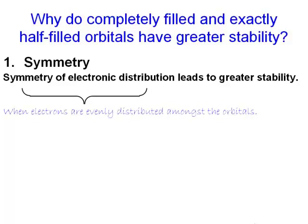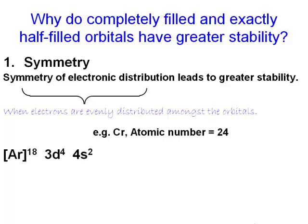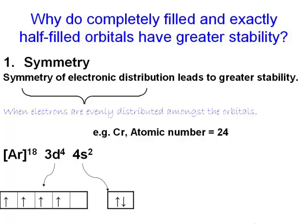For example, according to the Aufbau principle, we expected a 3d4 4s2 configuration for chromium. Let us use the arrows and boxes diagram to get a picture of this arrangement of electrons. So the boxes represent the orbitals and the arrows inside them represent the electrons. The electrons in these two valence orbitals are not evenly distributed.